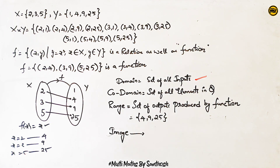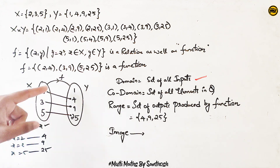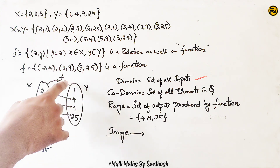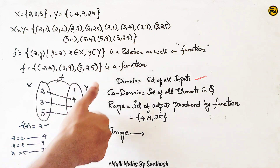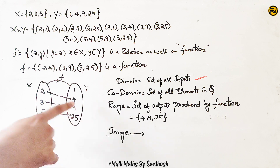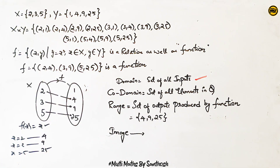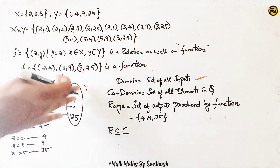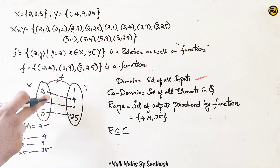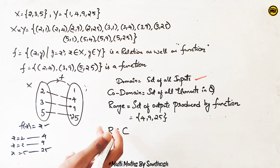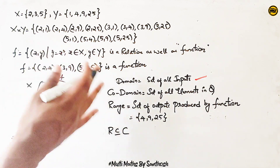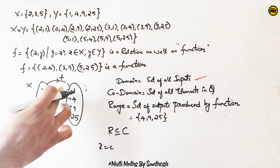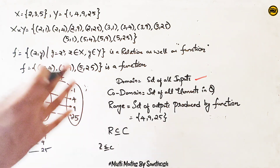Co-domain is the set called co-domain. The first set X is related to elements — this is the second set Y. This is the total co-domain set. Suppose the range is equal to co-domain. But if the range is a subset, it is required — because if it is equal, we may be aware of that condition.